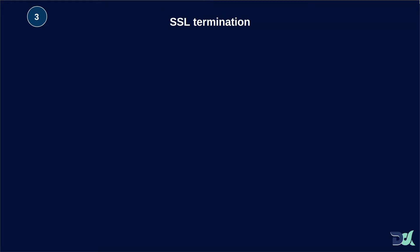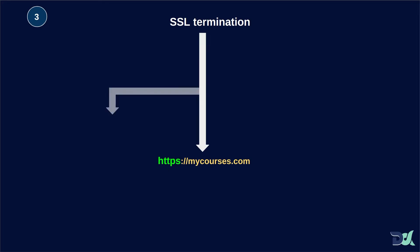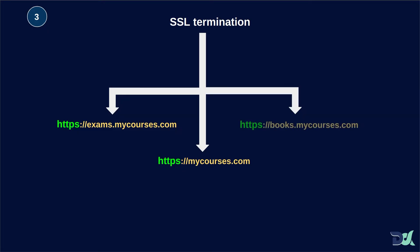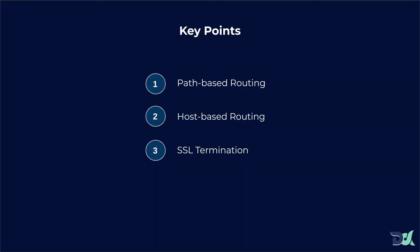The third and last use case is SSL termination. Our mycourses.com site will go to HTTPS, secured with the HTTPS protocol. Whatever we use — exams.mycourses.com or books.mycourses.com — we also need HTTPS with SSL termination. So we have talked about three key points: path-based routing, host-based routing, and SSL termination. These are our client's three requirements for their website.